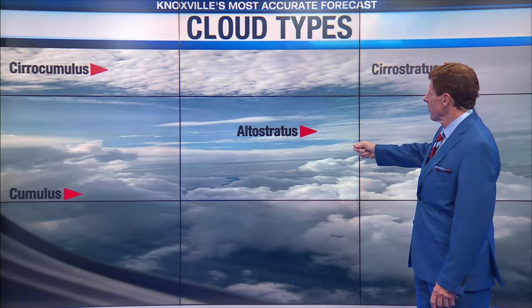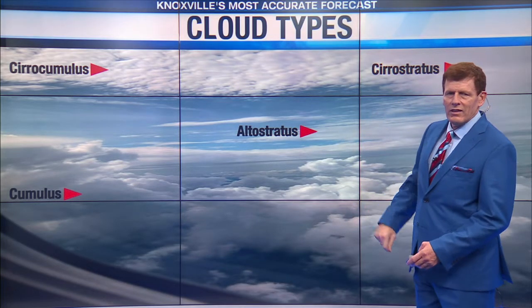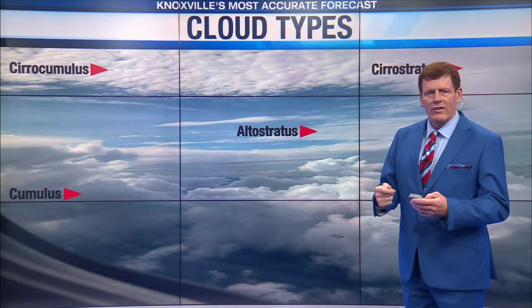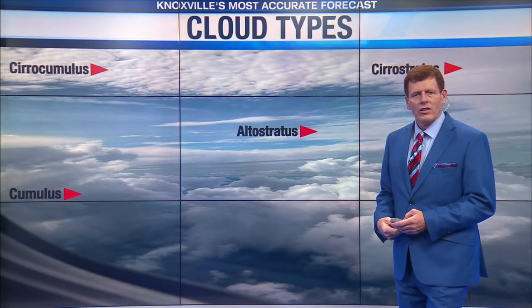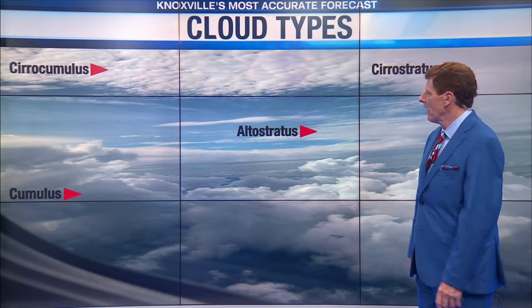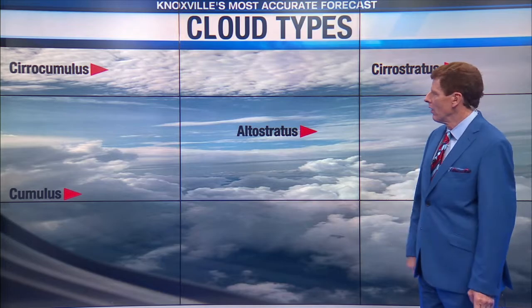The alto stratus — we talked about the mid-level. And the cirrostratus: cirrostratus is way up in the sky, and it's stratified, so it's way up high and stretched out as well.